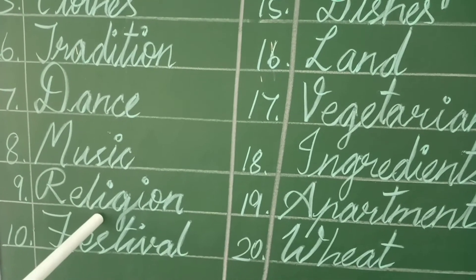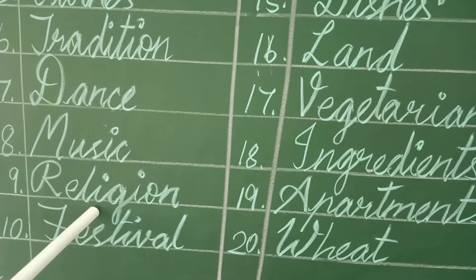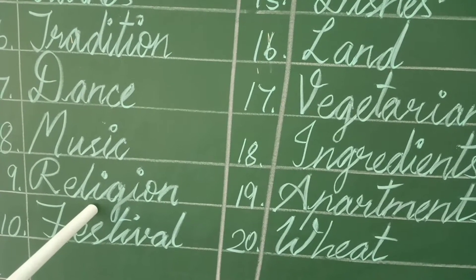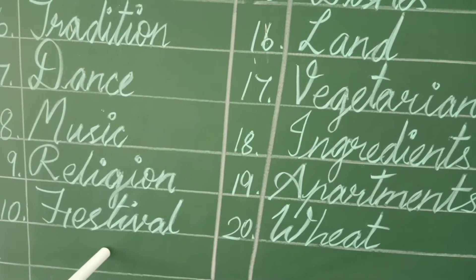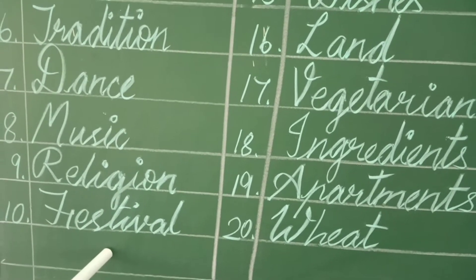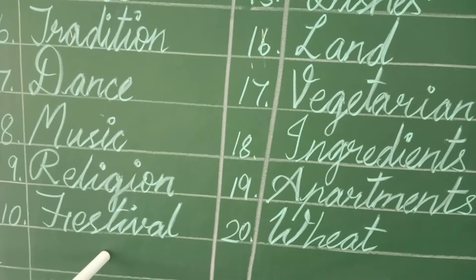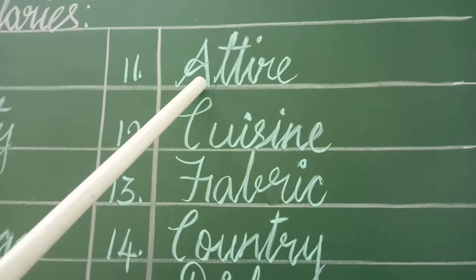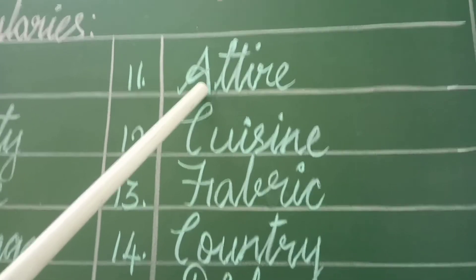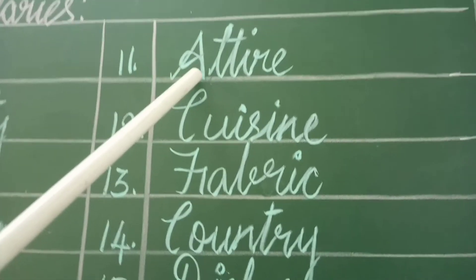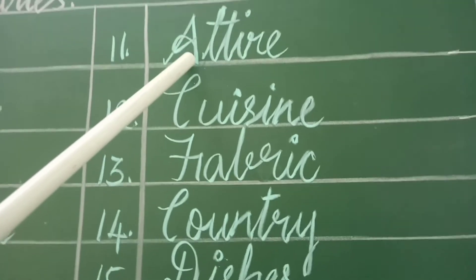Isai. Religion — it means a particular system of faith. Madan. Festival — it means a day or period of celebration. Villa. Attire — it means clothes, especially fine or formal ones. Uday.